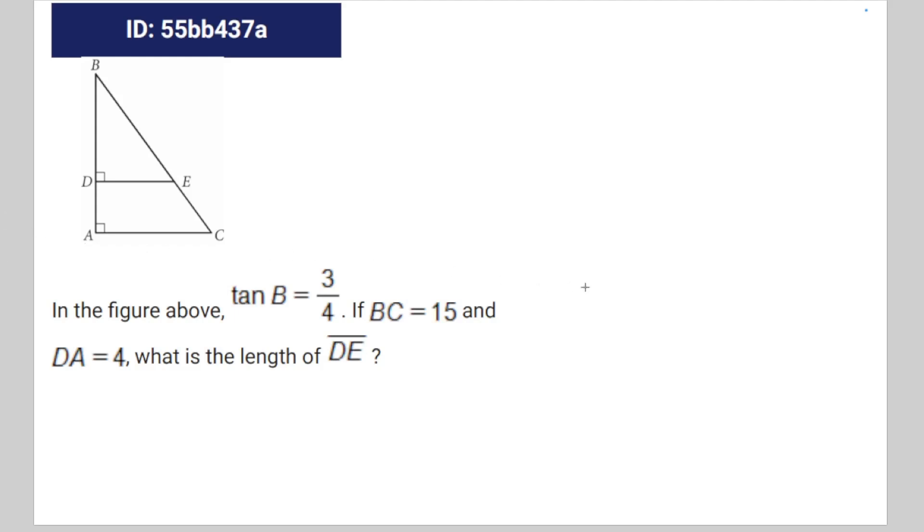In the figure above, tan B is equal to 3 over 4. If BC is equal to 15 and DA is equal to 4, what is the length of DE? We're given the relative relationship between two sides of 3 and 4, and you might notice something here - this is a 3-4-5 triangle.